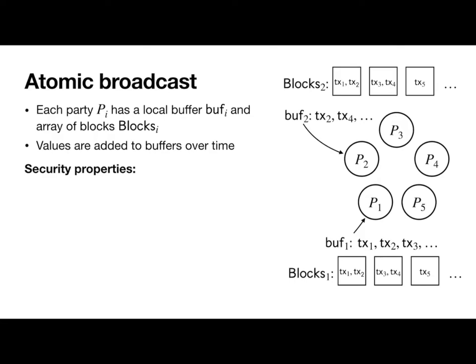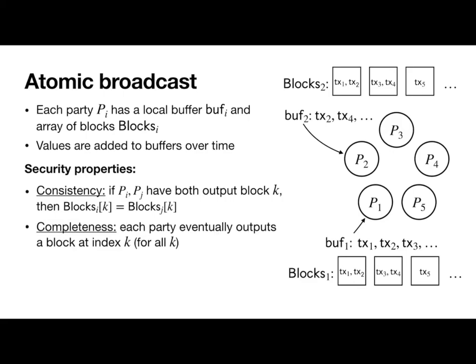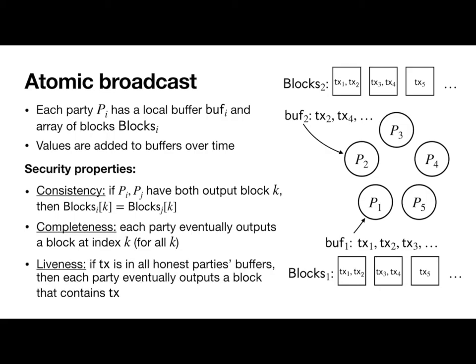The security properties that we care about are consistency, which says that if two parties have both output a block at the same position in their array or chain, then they should be the same block. Completeness says that each party eventually outputs a block at index k for all k. And finally, liveness says that if a transaction is in all honest parties' buffers, then each party should eventually output a block that contains that transaction.